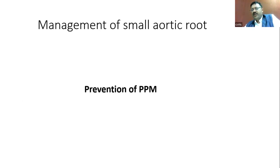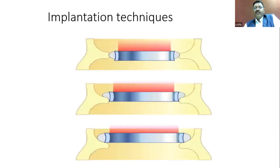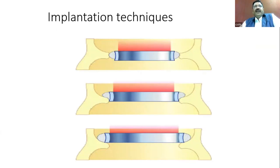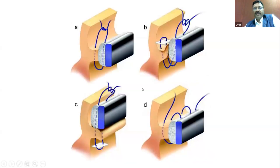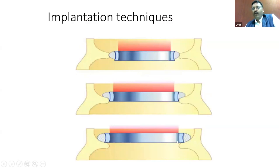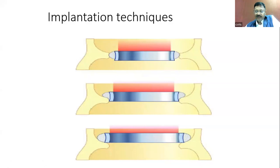Management of a small aortic root is essentially prevention of PPM. A valve can be implanted in three ways: intra-annular (suture ring goes inside the annulus), supra-intra (housing inside, suture ring above), or supra-annular. This distinction has an important bearing on the space available for blood flow — which I will explain further.